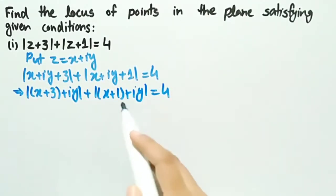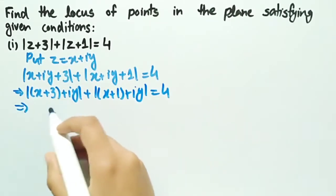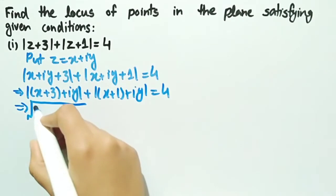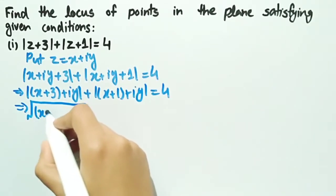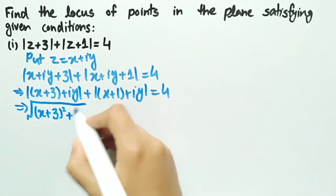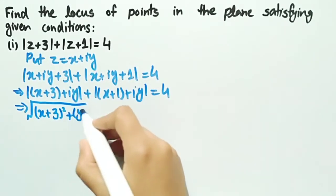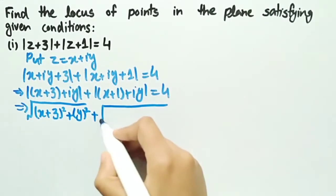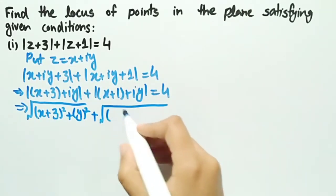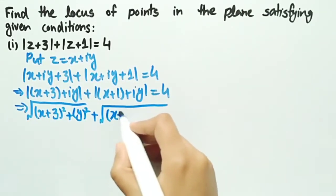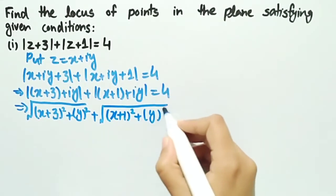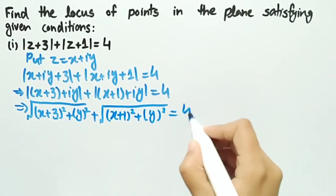Taking the modulus of these two terms: mod of x plus 3 plus iota y equals square root of (x plus 3) squared plus y squared, and mod of x plus 1 plus iota y equals square root of (x plus 1) squared plus y squared, and the sum equals 4.